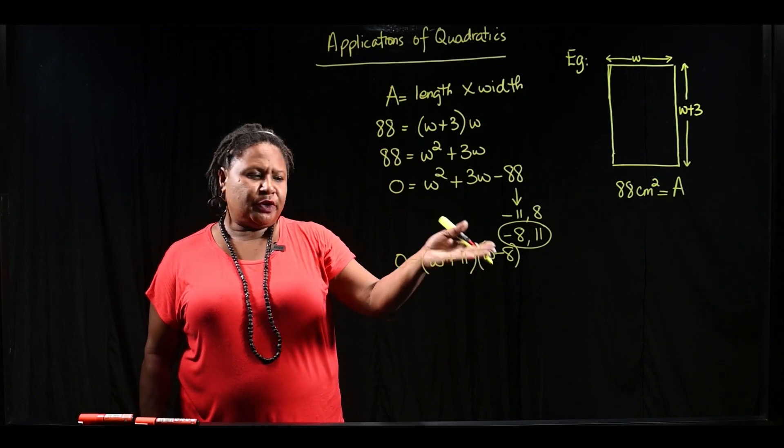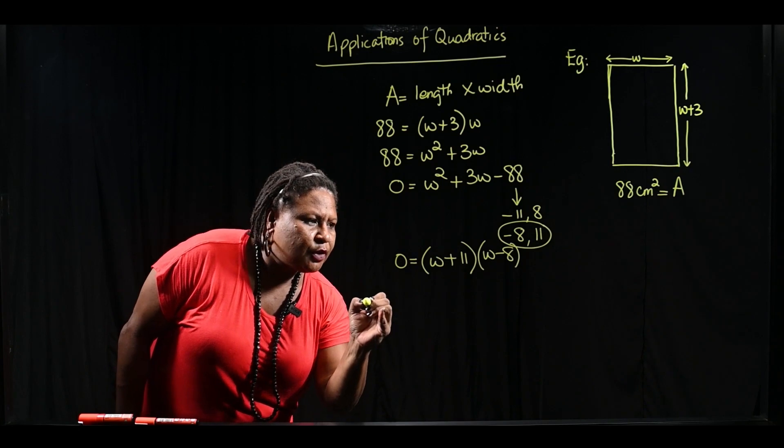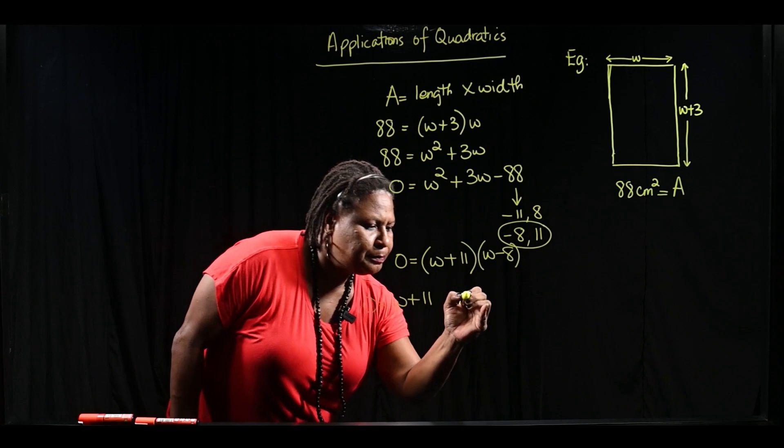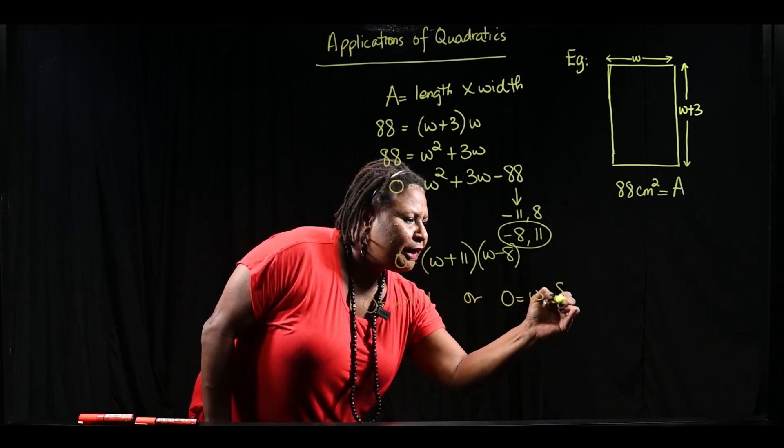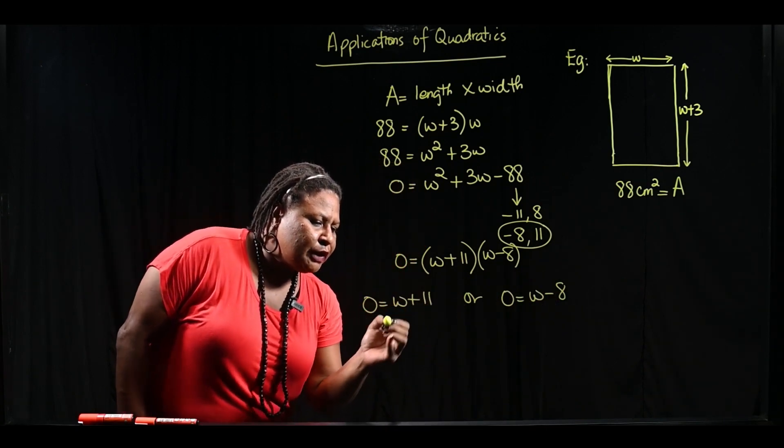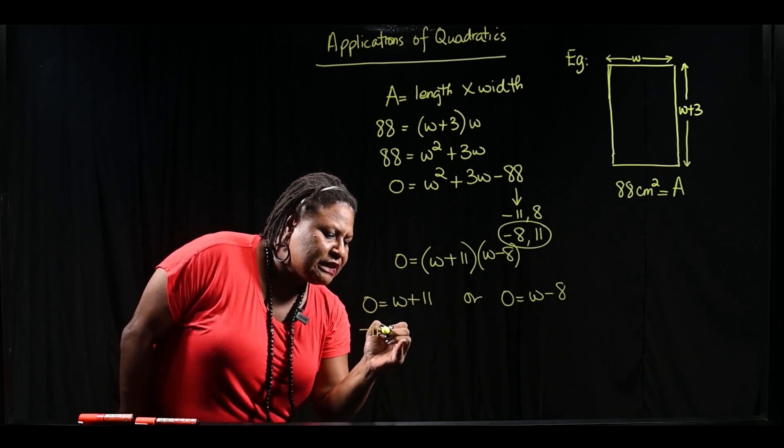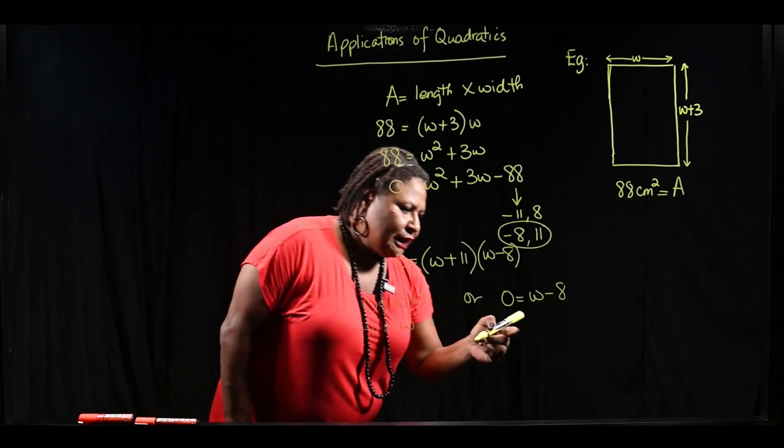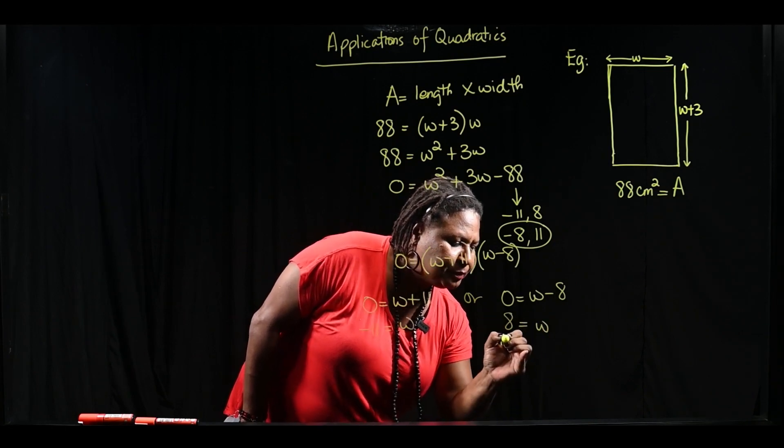So once we get to this point, we are going to apply the null factor law, which we've already seen, where each factor will be equal to 0. And we have 0 equal to W minus 8. We're going to solve for W, move 11 across to this side. So in the first instance, we have W equal to negative 11. And here, we have W equal to positive 8.